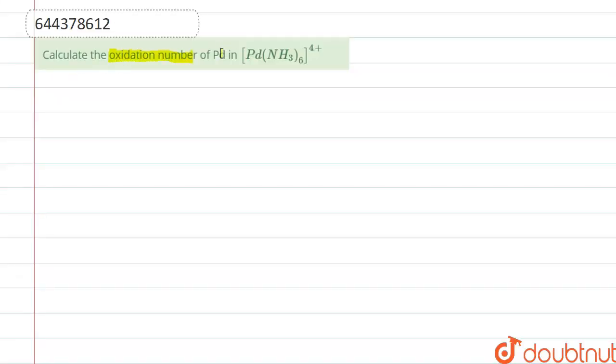Calculate the oxidation number of Pd in this compound. The compound is given as [Pd(NS3)6]^4+. The compound has charge 4+, so we have to calculate the oxidation number.